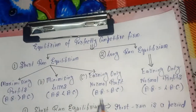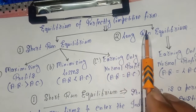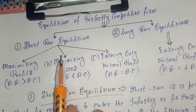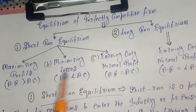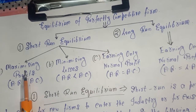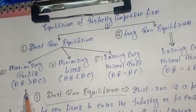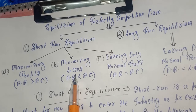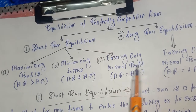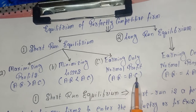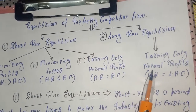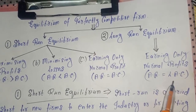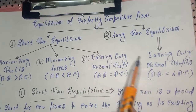Coming to the equilibrium of a perfectly competitive firm, we have short run equilibrium and long run equilibrium. In short run equilibrium, three possibilities exist: the firm earns maximum profit (AR > AC), incurs losses (AR < AC), or earns only normal profit (AR = AC). But in the long run, there is only one possibility — all firms earn only normal profits, where AR equals LAC (long run average cost).